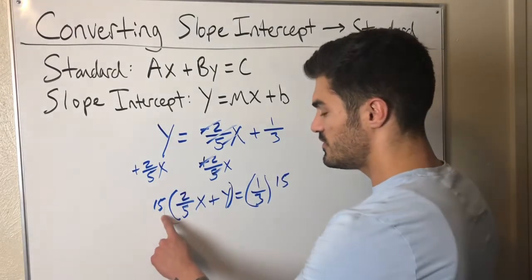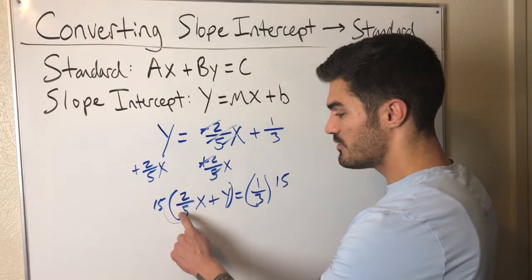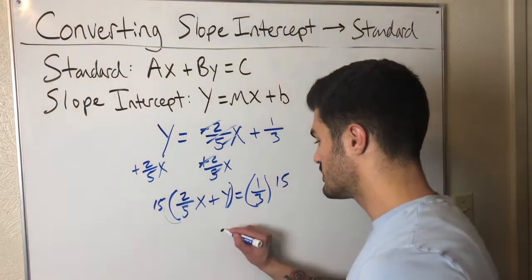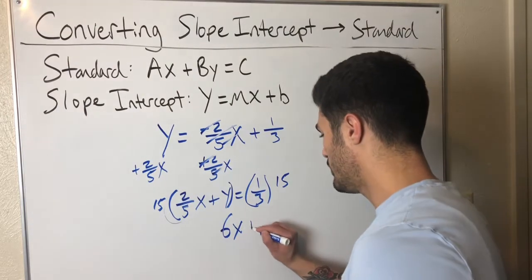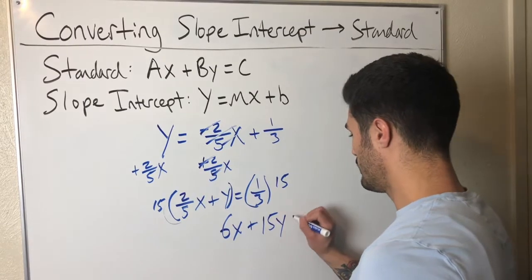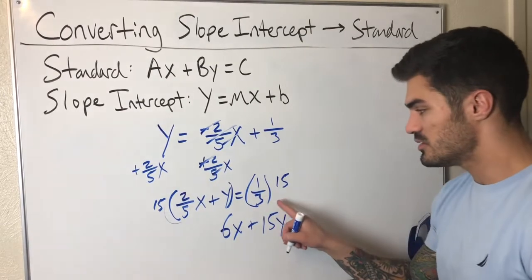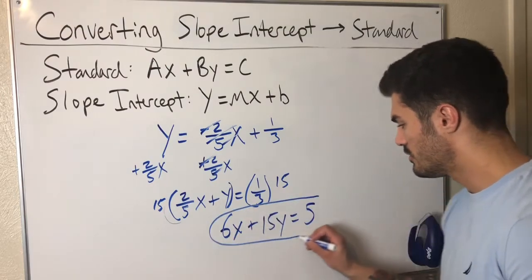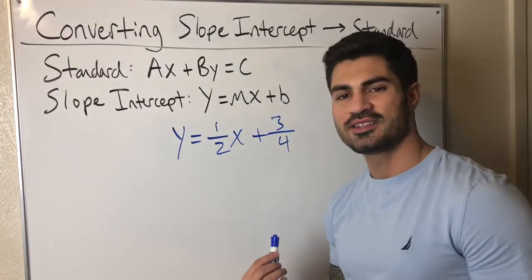Okay, so now I get 15 times two over five. The five goes into the 15 three times. So I'm left with three times two, which is six x plus 15y equals 15 times one third. So 15 over three, that's five. All right, last example.